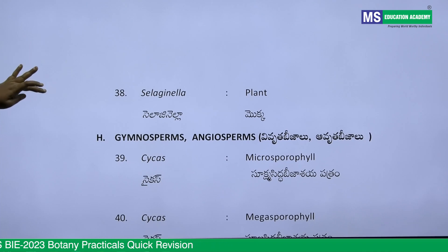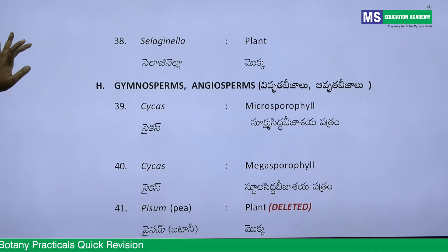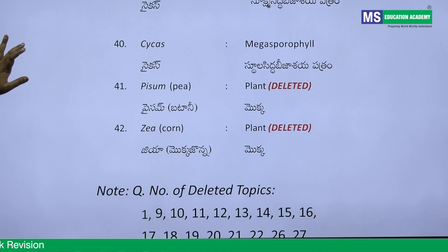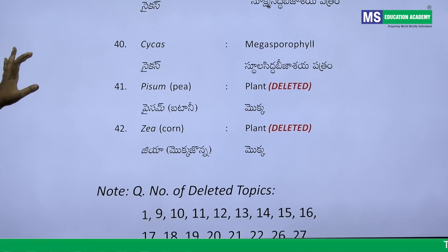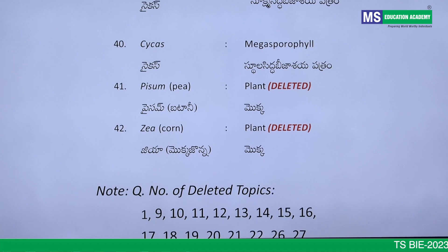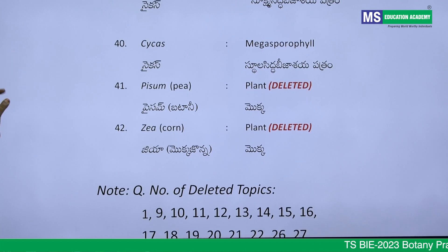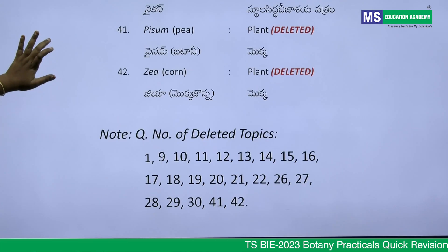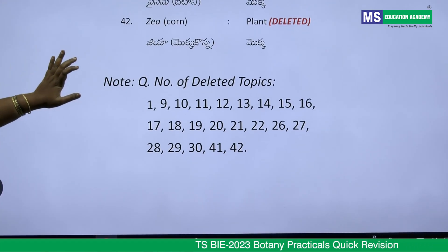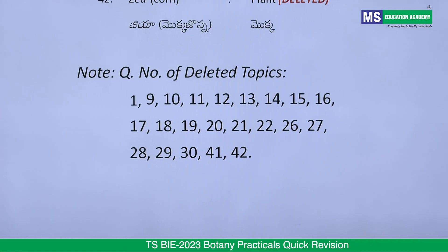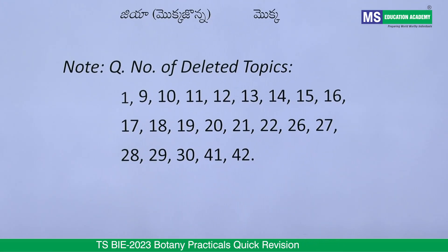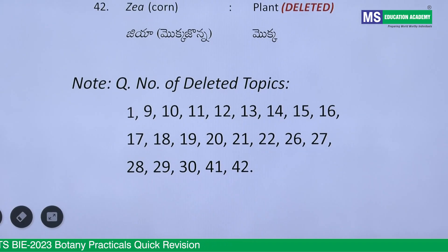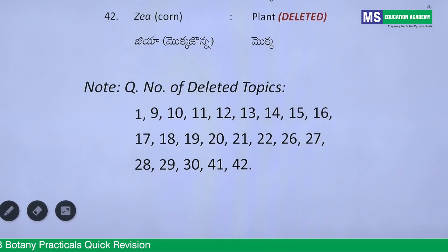For gymnosperms and angiosperms: Cycas microsporophyll and megasporophyll are present. Pysame and Zyame are not there. Many things are not there. Question numbers 9 to 22 are not present in the spotter list. Go through this video carefully and based on the information provided, focus on the left-over topics.